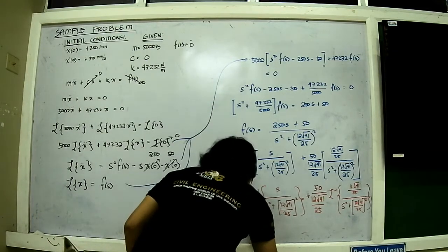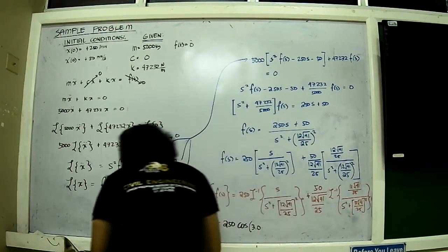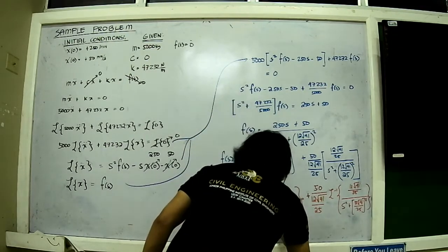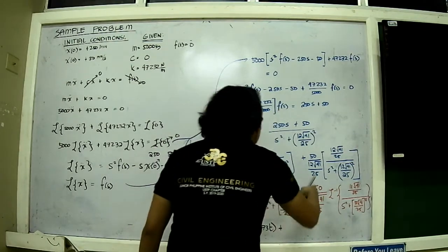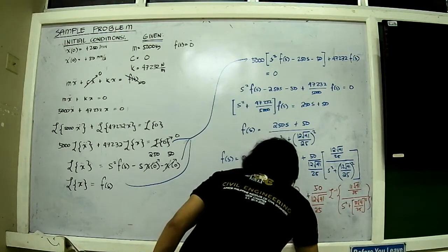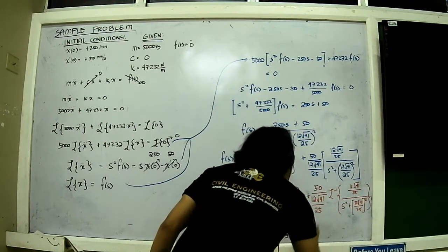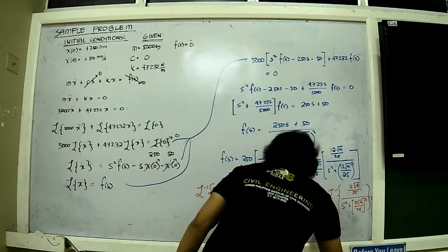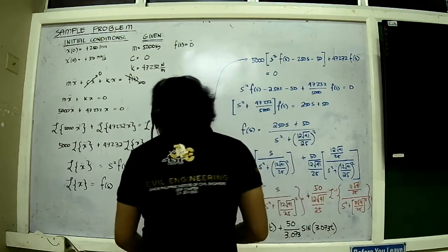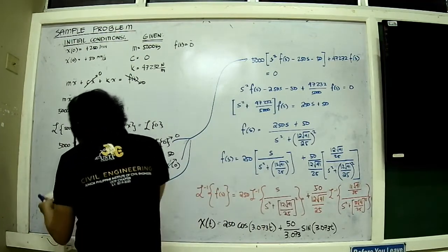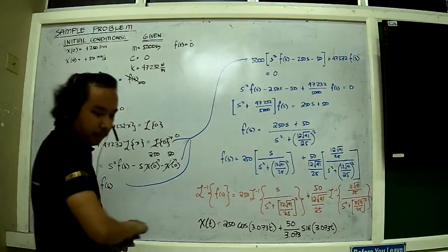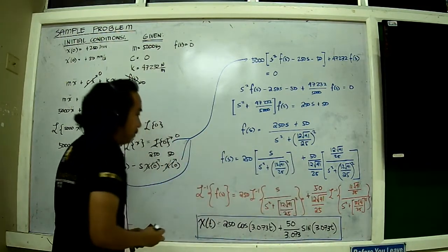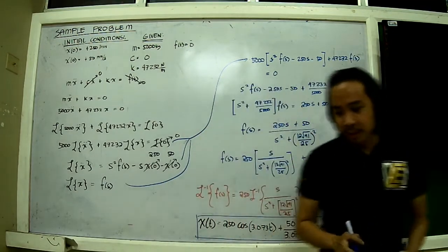The natural frequency comes out to approximately 3.073 radians per second. So x(t) = 250·cos(3.073t) plus 50 divided by √4125 times sine(3.073t). This is the same formula I derived using the previous method — the very same expression. Using Laplace transform produces the exact same equation as before.